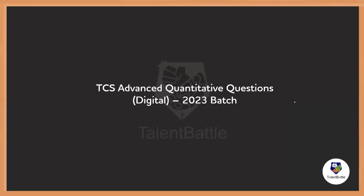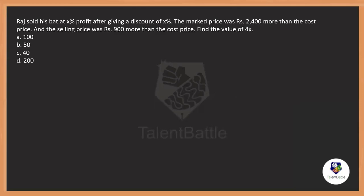So without further ado, we will try to solve the questions that appeared in the digital exam before. Here is the first question: Raj sold his bat at X percentage profit after giving a discount of X percentage. The marked price was 2400 rupees more than the cost price and the selling price was 900 rupees more than the cost price. Find the value of X.